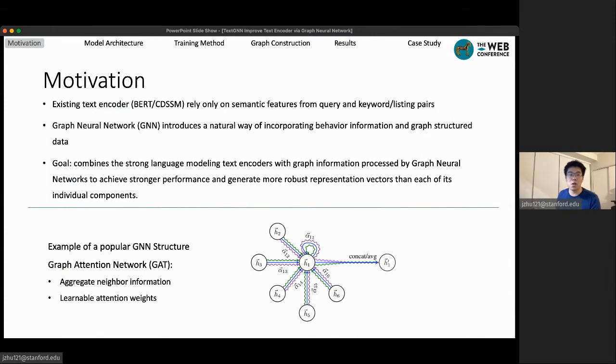Note that we are proposing a very general framework where we could easily combine popular individual components. The text encoders can be CDSSM, BERT or TwinBERT, and the GNN parts can be GraphSage, GAT or other GNN structures. This can be very flexible and you can combine them on your own depending on your own applications.